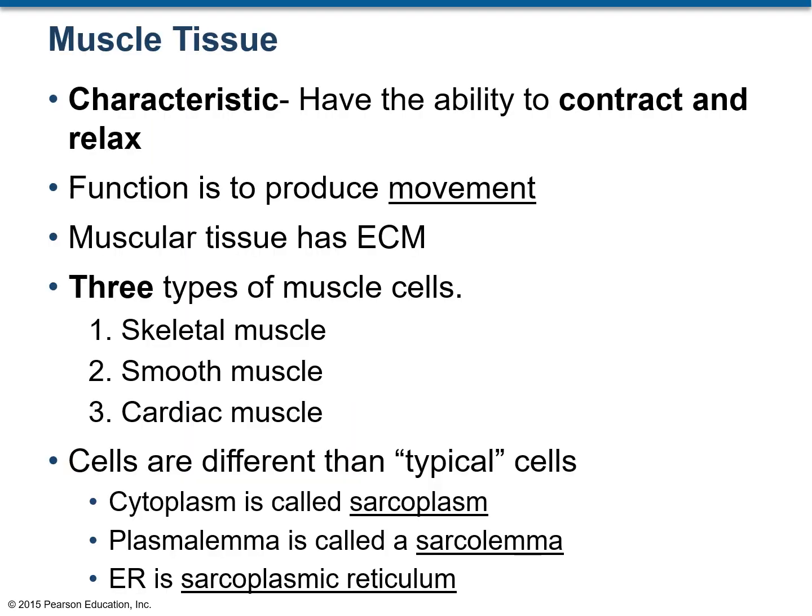We will start with muscular tissue. Muscular tissue is made up of muscles and the most important characteristic or feature of the muscular tissue is its ability to contract and relax — that means to shorten and to extend or elongate — and this ability helps muscles to generate movement. Muscular tissue is made up of muscle cells as well as extracellular matrix.